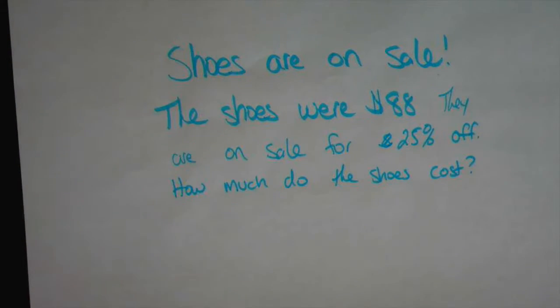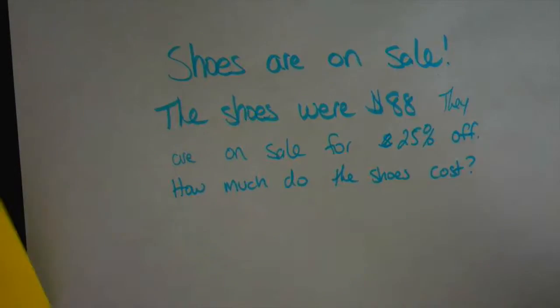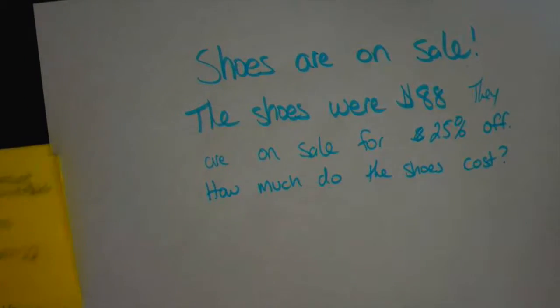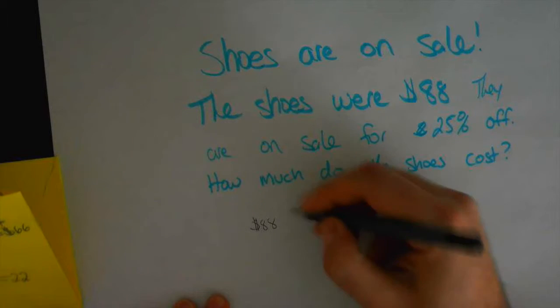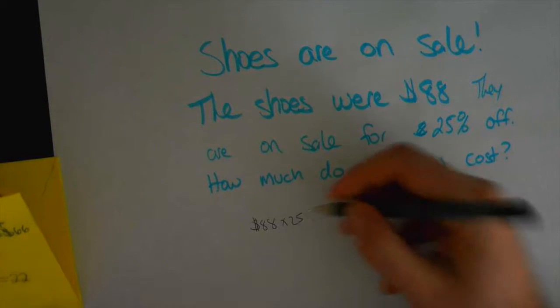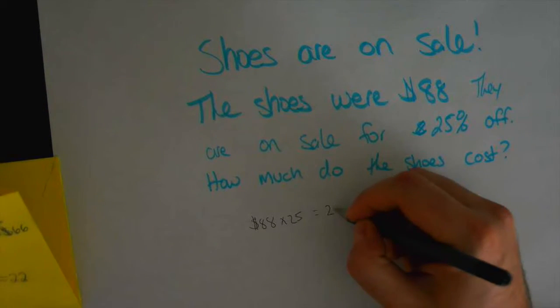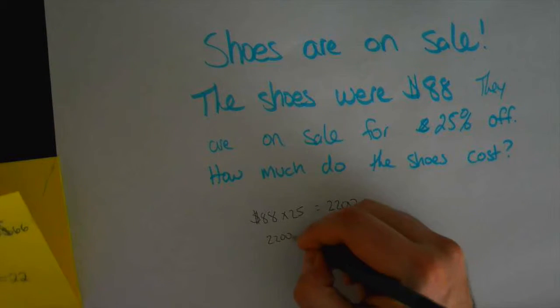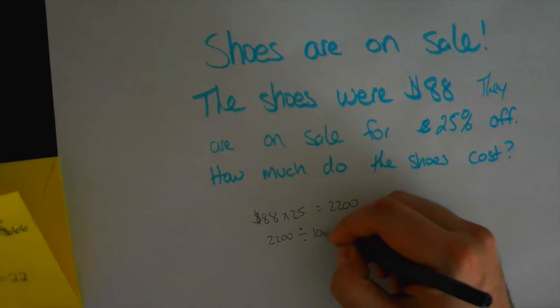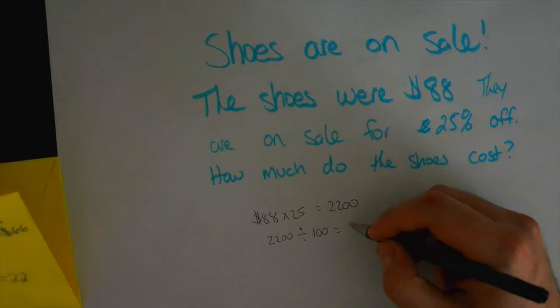So tell me what you did, and I'm going to write it down. So we did $88, which was the total cost of the shoes, and we times it by $25, which was how much it was on sale for, and we got $2,200. And then we took $2,200, and we divided it by $100 because 25% is out of $100, and then we got $22.